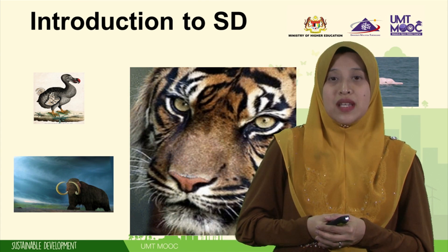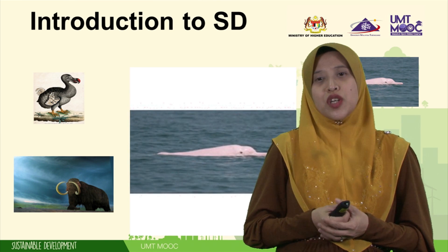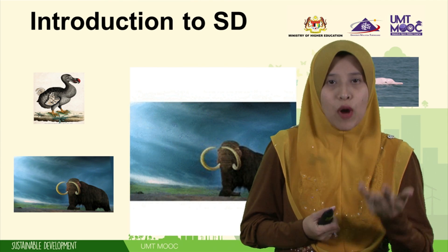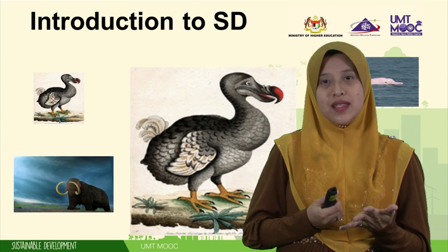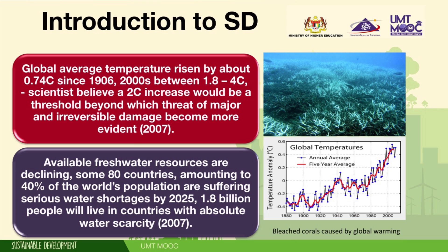Species are becoming extinct at rates 100 times faster than the rates shown in the fossil record, because of land use changes, habitat loss, overexploitation of resources, pollution, and the spread of invasive alien species. The picture shows coral reefs destroyed by the effect of drastic global warming, turning them white, while the diagram shows how high temperatures have risen since the 1900s until the year 2000.